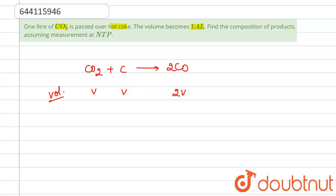So let if we take that x liter of CO2 gives 2x liter of CO. From here, because it is V to 2V, so x liter of CO2 gives 2x liter of CO.